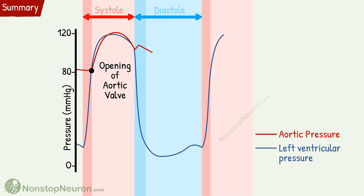Towards the end of the ejection phase, the backflow of the blood produces a dicrotic notch. During diastole, the blood keeps moving forward, so there is a gradual fall in the pressure. The next cycle begins with the next systole.